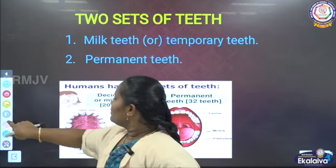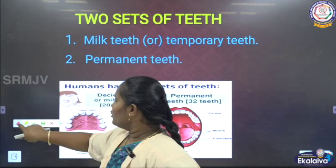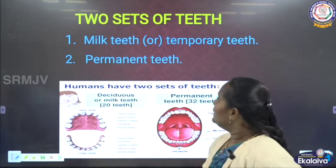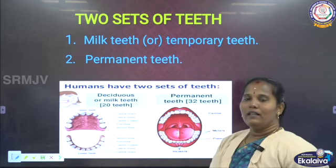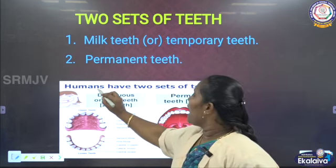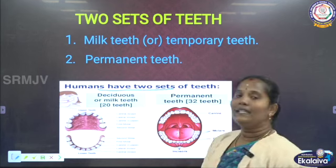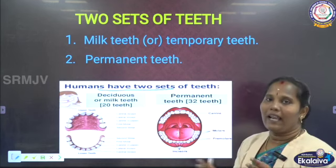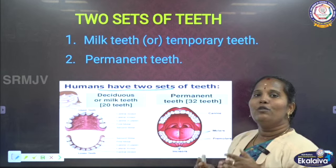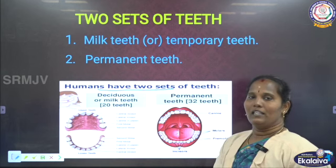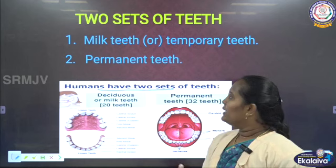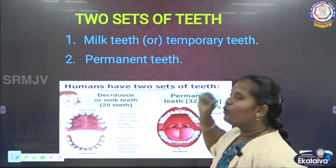We saw the importance of teeth. Now we have to see about the two sets of teeth. Humans have two sets of teeth in their lifetime. While we are born as a baby, we don't have teeth.